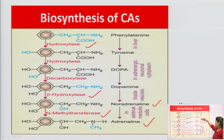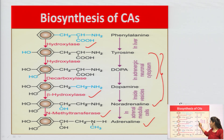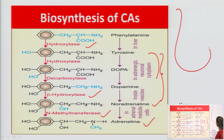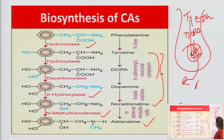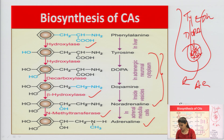The steps from tyrosine to DOPA, and DOPA to dopamine, and dopamine to noradrenaline, are all carried out in the adrenergic nerve ending. Further, noradrenaline is carried to the adrenal medulla, where it is converted into adrenaline. This is the synthesis pathway of noradrenaline and adrenaline.